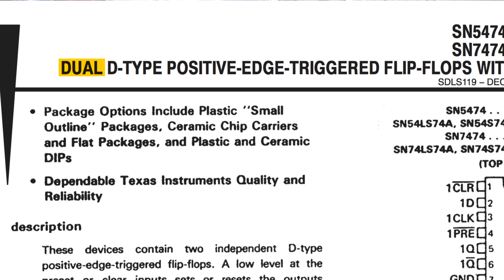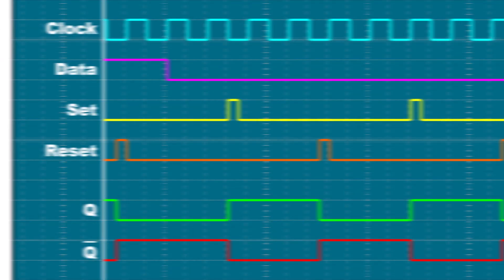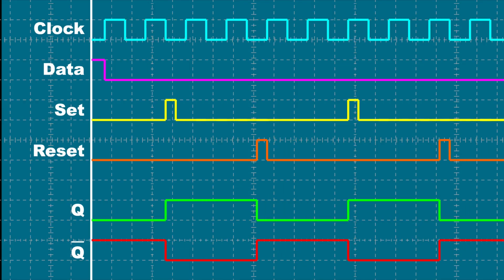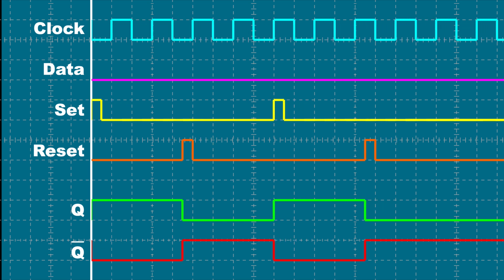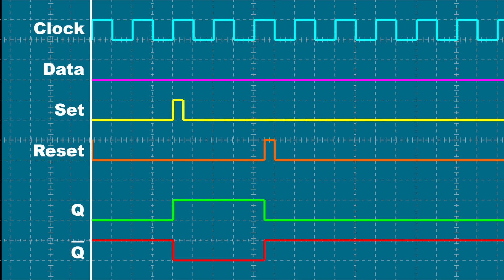The 74LS74 is a dual flip-flop, meaning it contains two flip-flops. We'll just be using the first one. In the flip-flop lesson episode, we learned that inputs clock, data, S, and R, or in this case, preset and clear, can all affect the outputs Q and not Q. For the demo, I'm going to connect each of those inputs to a button so I can control each input manually. Let's get this thing hooked up.